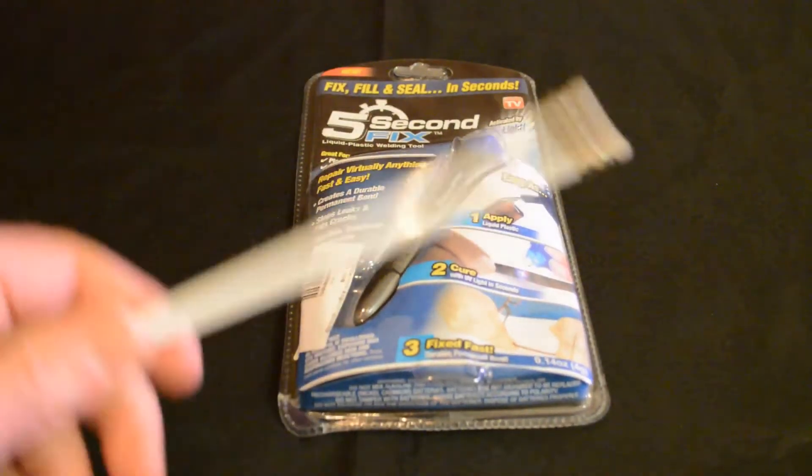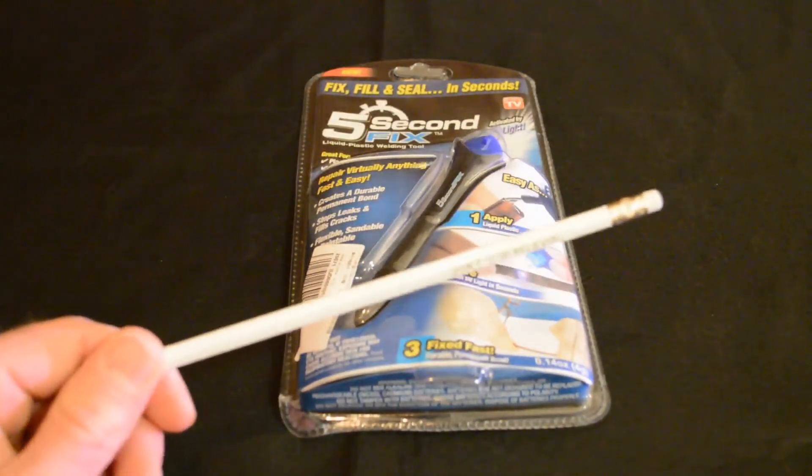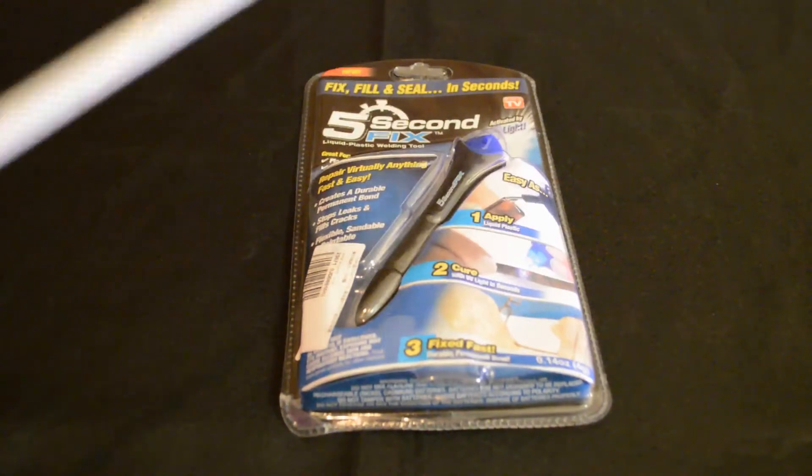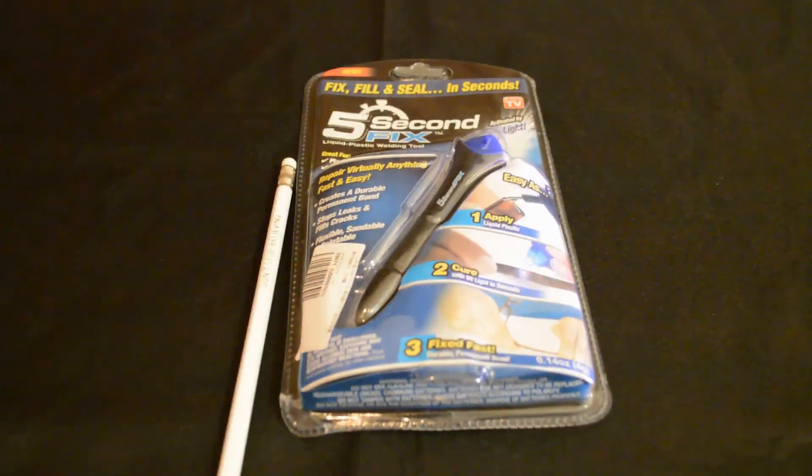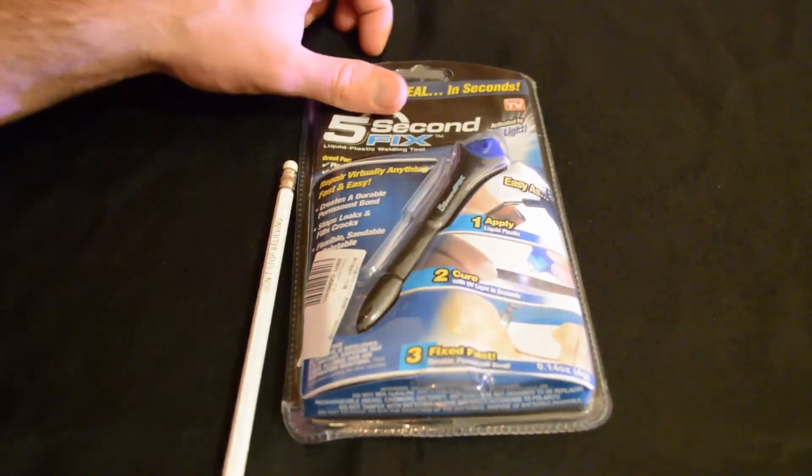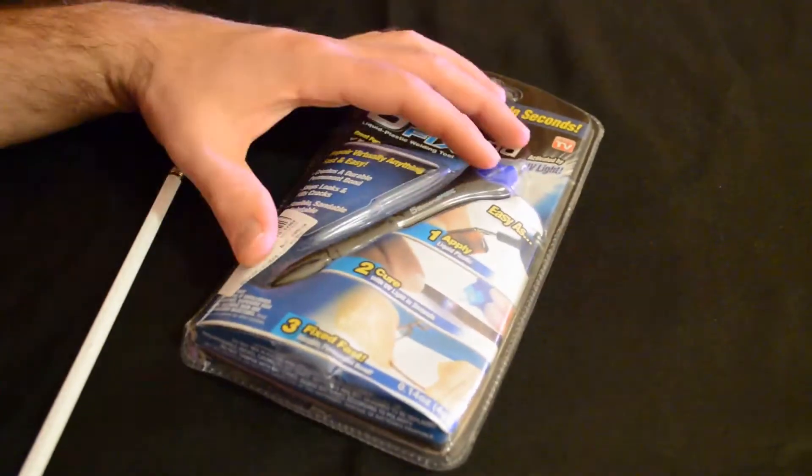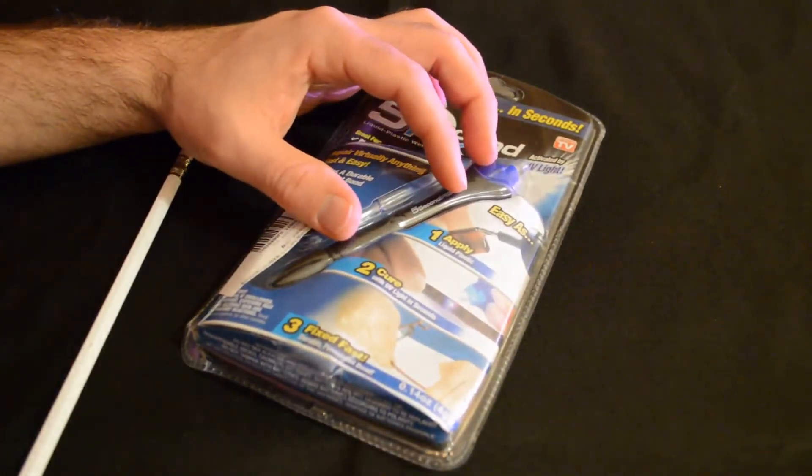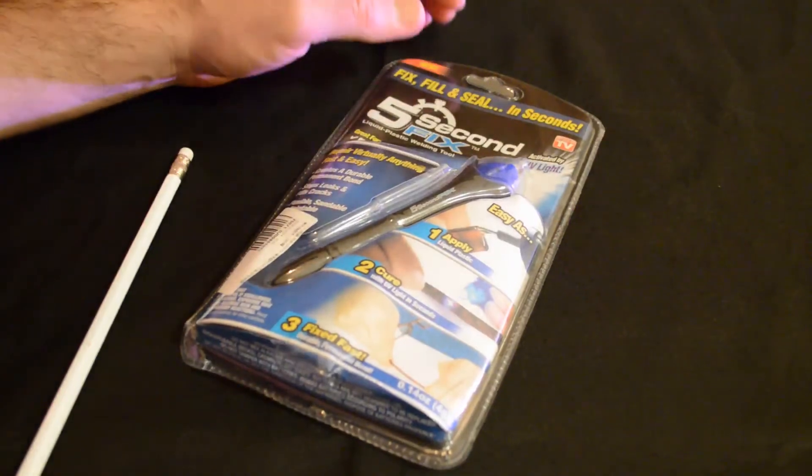Today I thought it'd be perfect to use this pencil to test this thing out. It's a perfect bond to see how strong this is, especially on wood. All you have to do is apply the liquid plastic, and then it comes with a UV curing light, and it should be fixed. So let's test it out.